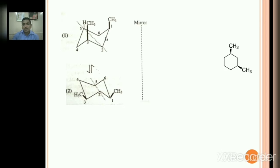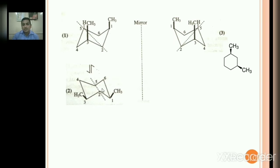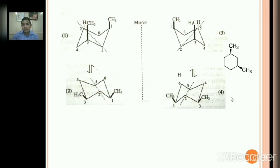Conformer 1 has a mirror image — conformer 3. These are two non-superimposable mirror images. Conformer 2 also has a mirror image — conformer 4 — and these are also non-superimposable mirror images. These are the various conformations of cis-1,3-dimethylcyclohexane.